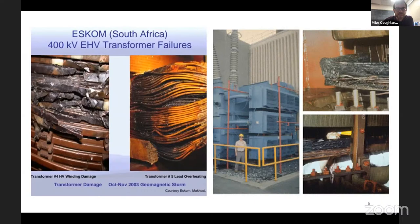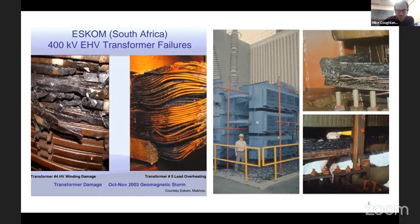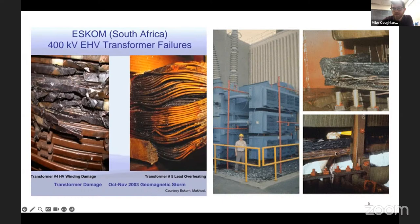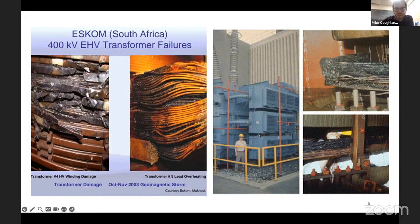I want to show some of the damage that can be caused by these GICs. On the left is a power transformer in South Africa that was damaged by GICs during the 2003 Halloween storm. The right image is another transformer in New Jersey that saw some serious GICs during the 1989 storm — the same one that knocked out power in Quebec for quite a few hours. These are obviously not small pieces of infrastructure, as you can see by the very convenient scale person in this picture. Understanding and predicting the underlying phenomena that causes these is critical to preventing damage and the disruption they can cause.